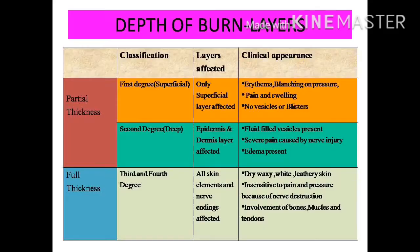The depth of burns is classified as partial thickness and full thickness, or by degrees: first, second, third, and fourth. In first degree, only the superficial layer is affected — we see erythema, blanching on pressure, pain and swelling, but no vesicles or blisters. In second degree, both the epidermis and dermis are affected; vesicles are present along with severe pain from nerve injury and edema. In third and fourth degree, all skin elements and nerve endings are affected. The skin looks dry, waxy, white, and leathery. There is no pain due to nerve destruction, and there is involvement of muscles and tendons.